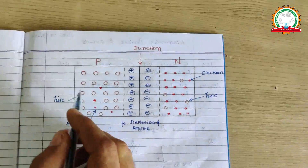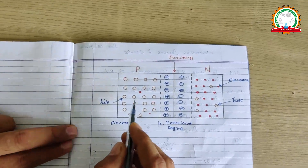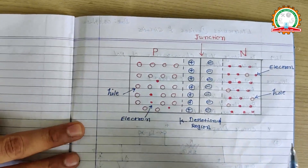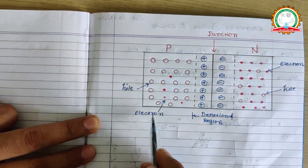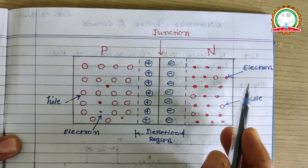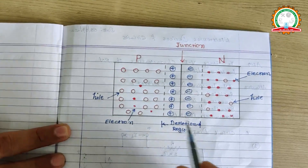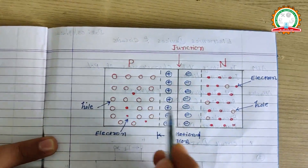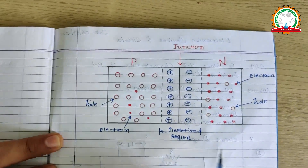The P-N junction diode is formed by using a combination of two semiconductors. One is a P-type semiconductor and another is an N-type semiconductor. In the P-type semiconductor, the majority carriers are holes and minority carriers are electrons. In the N-type semiconductor, the majority carriers are electrons and minority carriers are holes. When no supply is applied, a depletion region is created between the two sides of the junction, which opposes the flow of current.